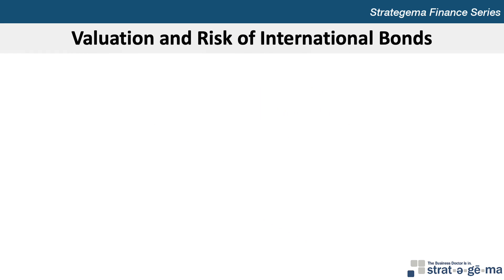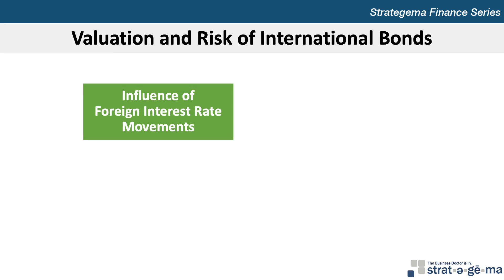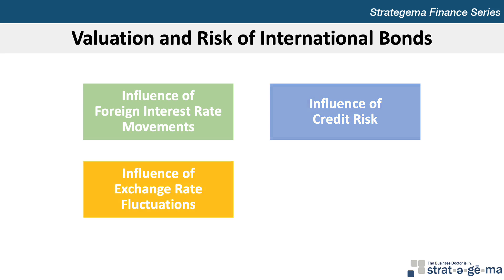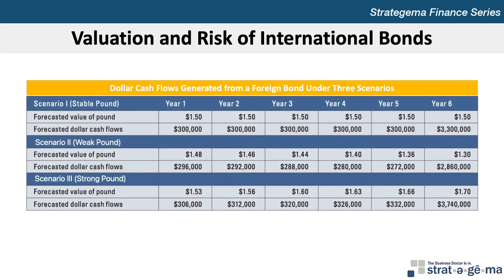The last concept in the chapter relates to valuation and risk of international bonds. Bond values can be influenced by foreign interest rate movements. As the risk-free interest rate of a currency changes, the rate of return required by investors in that country will change as well, and in turn the present value of a bond denominated in that currency changes. Bond prices can also be influenced by credit risk — an increase in credit or default risk causes a higher required rate of return and lowers the bond's present value, whereas a reduction in risk causes a lower required rate of return and increases present value. Another factor is fluctuating exchange rates: changes in the value of a foreign currency denominating a bond affect the U.S. dollar cash flows generated from the bond, thereby influencing the return to U.S. investors.